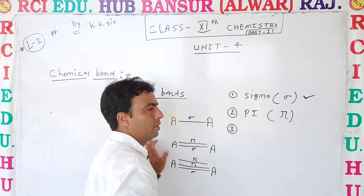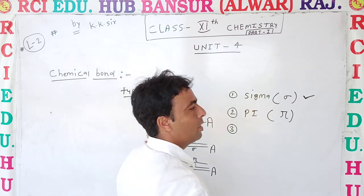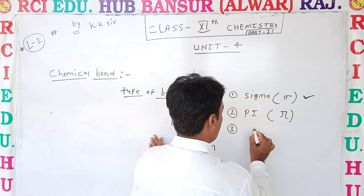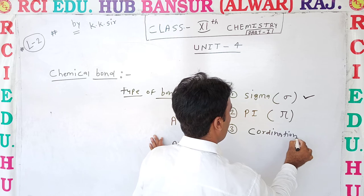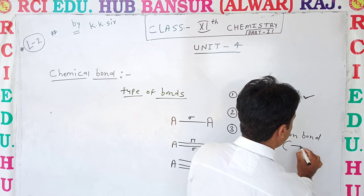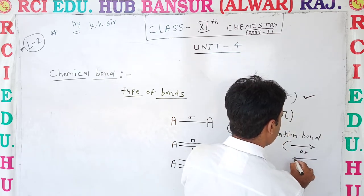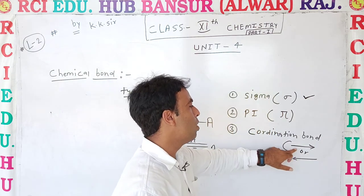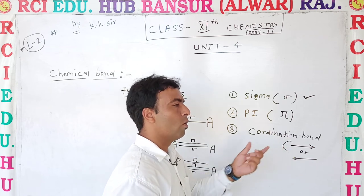A third type of bond, which you will see in higher classes, is called a coordination bond. A coordination bond is represented by an arrow sign — it can point in one direction. This arrow shows the coordination bond.